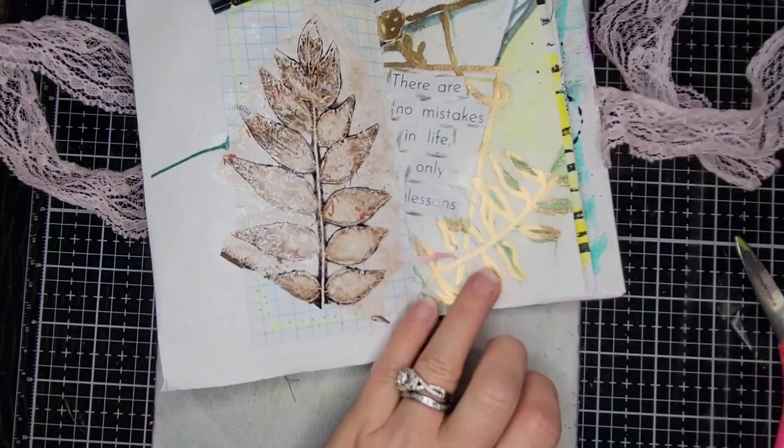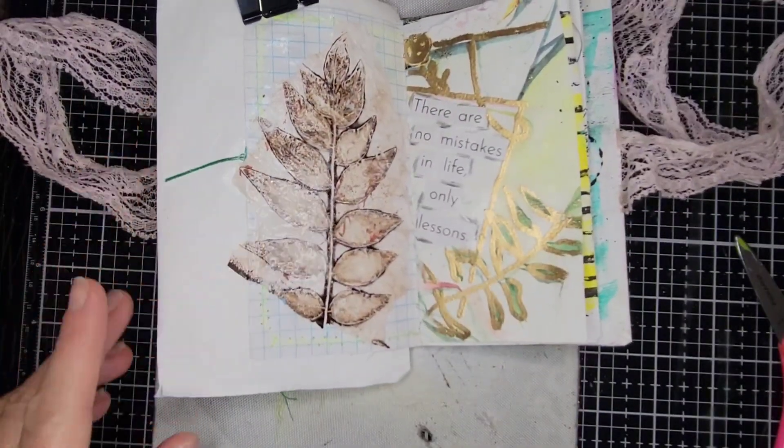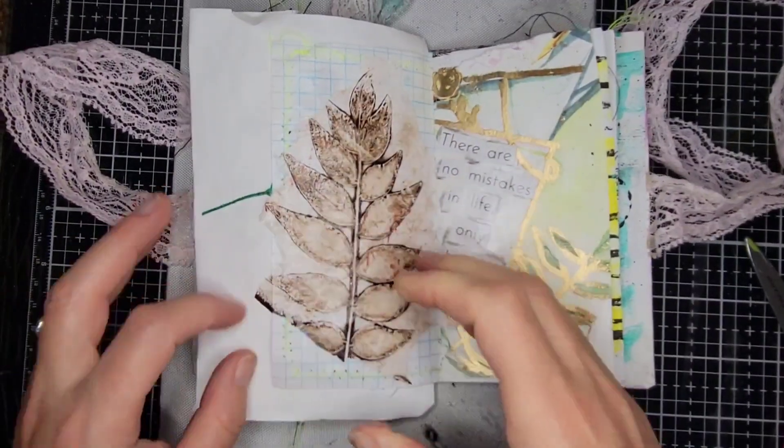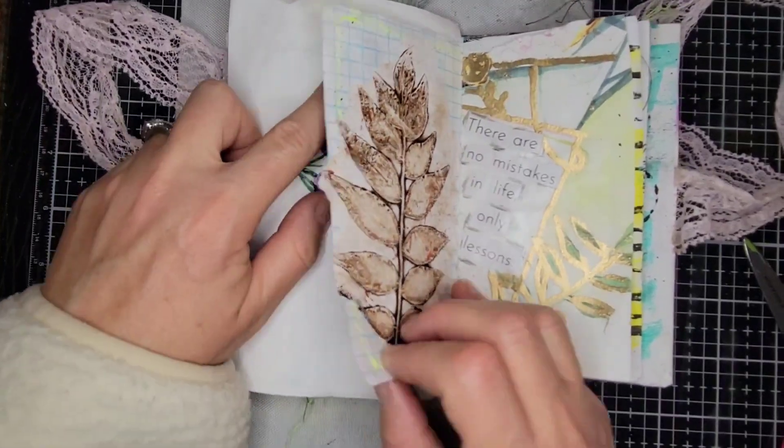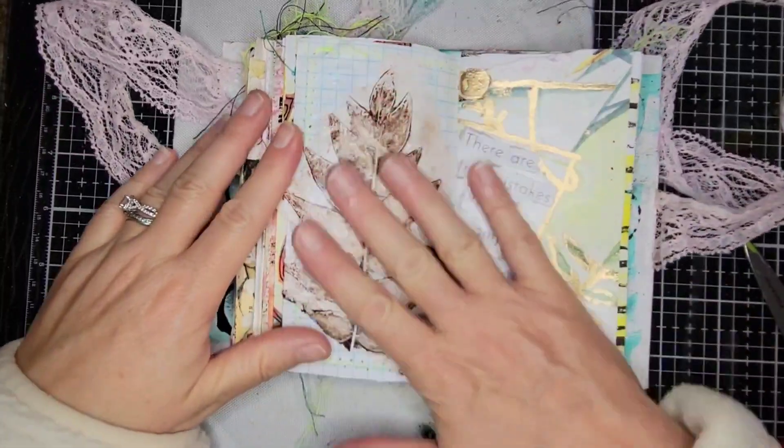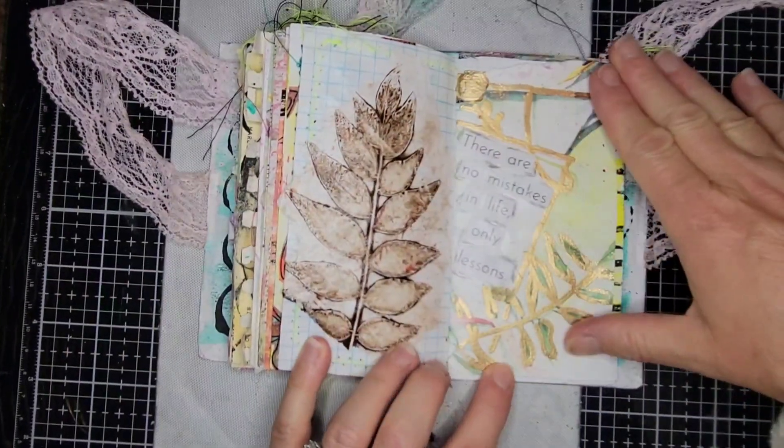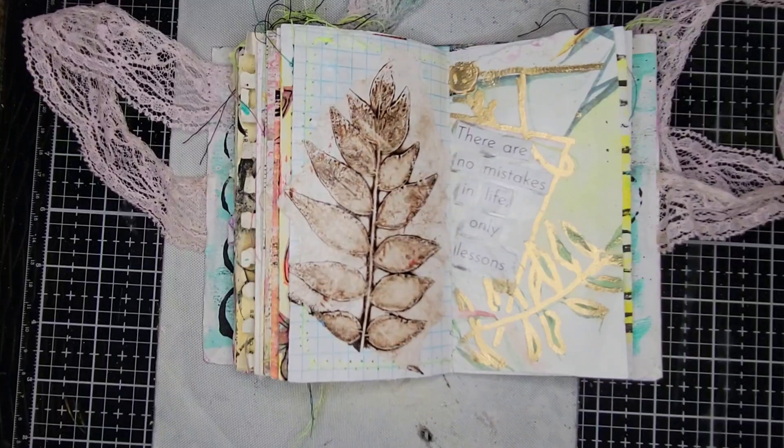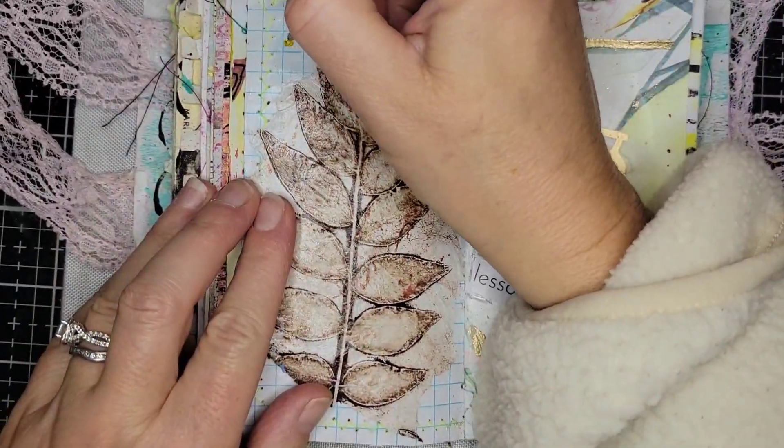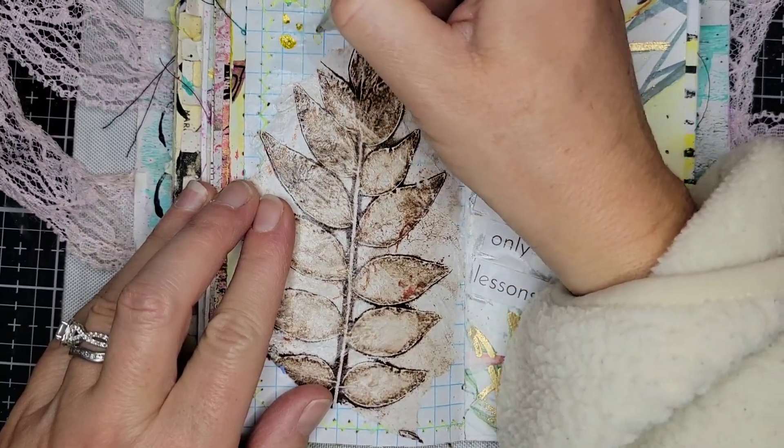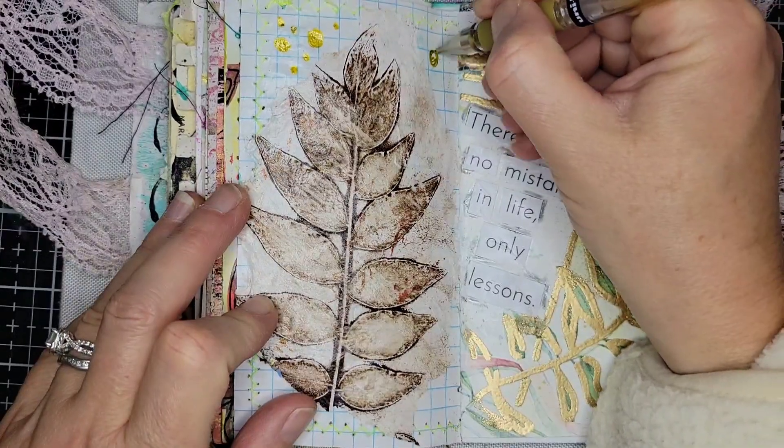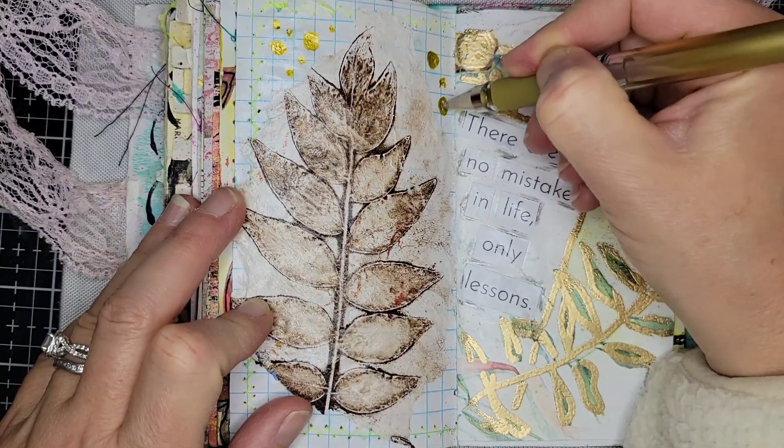So just putting it on the bottom and over top and just keeping this page simple with the nice embossing gold and the leaf imprint on the left. That was another page I did, I didn't do a video on that one. So I do always like to come in and add little mark making and details.